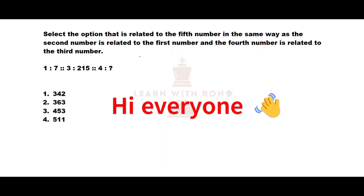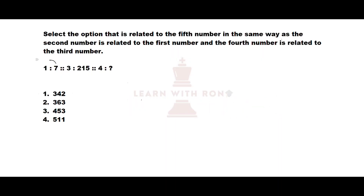Let's look at the first question. 7 is related to 1, 215 is related to 3, and we need to find a value related to 4. First, take 1 and 7. Observe the value 7 — I can write 7 as 8 minus 1, and 8 as 2 cubed. So 7 is 2 cubed minus 1, or (1 × 2)³ minus 1.